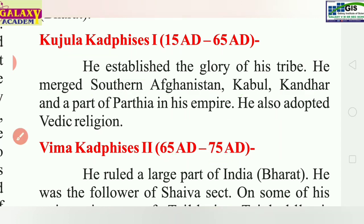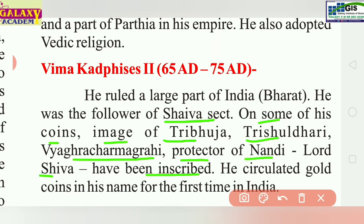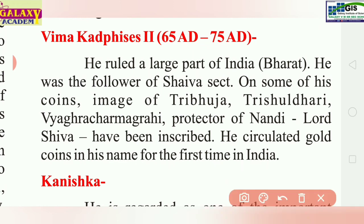He ruled the larger part of India and was a follower of the Shaiva sect. On some of his coins, images of Trishuldhari, Vyaghracharm-dhari Magarhi, protector of Nandi, and Lord Shiva have been inscribed. He circulated gold coins in his name for the first time in India.